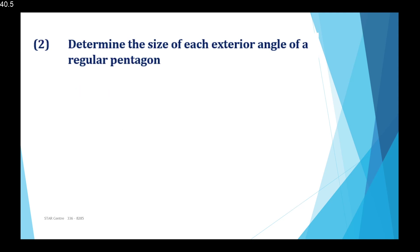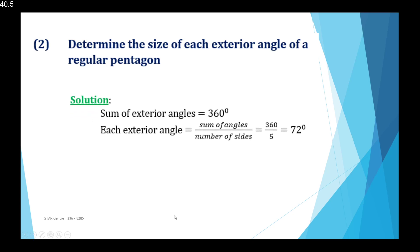Example 2: Determine the size of each exterior angle of a regular pentagon. The sum of exterior angles equals 360 degrees. Each exterior angle is that sum divided by the number of sides. A pentagon has five sides, so that is 360 divided by 5, which equals 72 degrees.